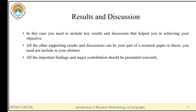In the results and discussions section, you need to include key results and discussion that help you in achieving your objective. All other supporting results and discussions can be part of the full research paper or thesis — you do not need to include them in your abstract. All important findings and major contributions should be presented concisely.